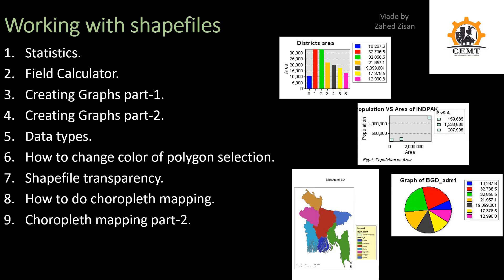The seventh video covers shapefile transparency — useful when you have two identical shapefiles representing different values layered on top of each other and need to see both. The eighth and ninth videos both cover choropleth mapping, which involves applying different colors to certain portions of your map. A choropleth map example is shown on screen.